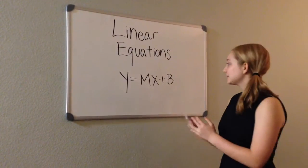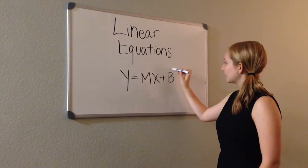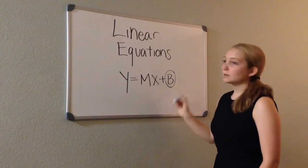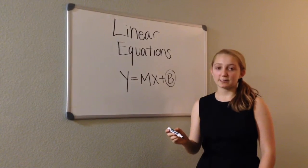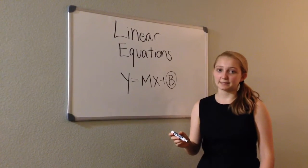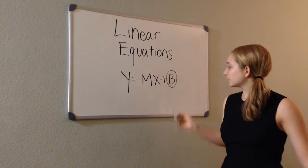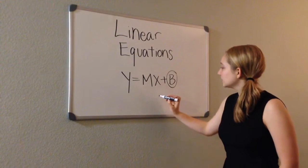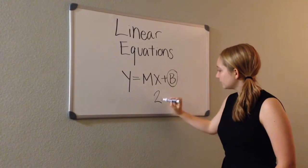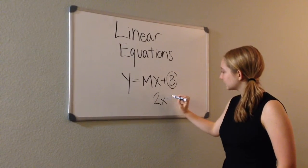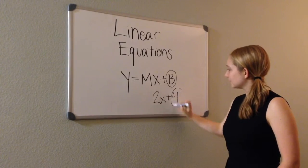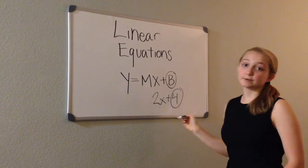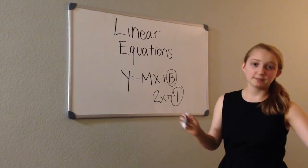B stands for the Y-intercept. The Y-intercept is where a line crosses the Y-axis on the graph. For example, in 2X plus 4, 4 would be your Y-intercept.